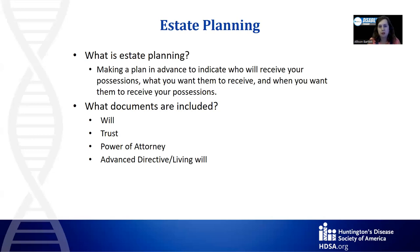Now we're going to talk about estate planning. Estate planning is making a plan in advance to indicate who will receive your possessions, what you want them to receive, and when you want them to receive them. Documents included in estate planning are a will or a trust, power of attorney, and an advance directive or living will. Today we're just going to focus on wills and trusts, with follow-up presentations covering power of attorney and advance directives.